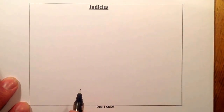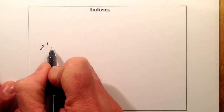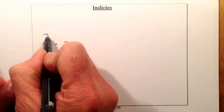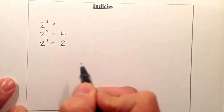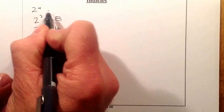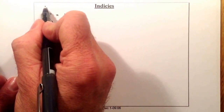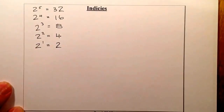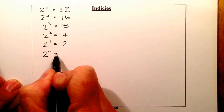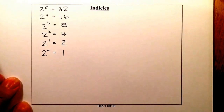Let's look at some numbers with powers. 2 to the power of 1 is 2. 2 to the power of 2 is 4. 2 to the power of 3 is 8. 2 to the power of 4 is 16. 2 to the power of 5 is 32. And from a previous rule, anything to the power of 0 equals 1, so 2 to the power of 0 is 1.